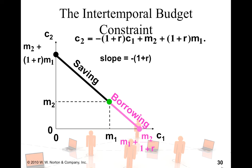When would you be borrowing versus saving? A consumer is a borrower if they choose to consume more than their income in the first period. All points to the right of the green endowment point belong to a borrower, while all points to the left belong to a saver. I suggest you now do the second quiz before going on to the third lecture.